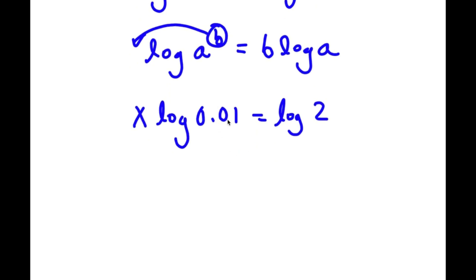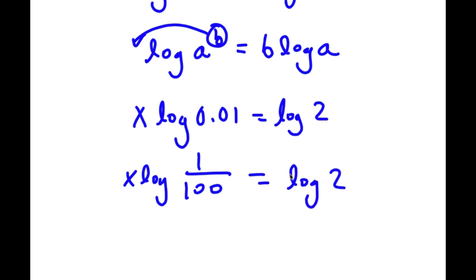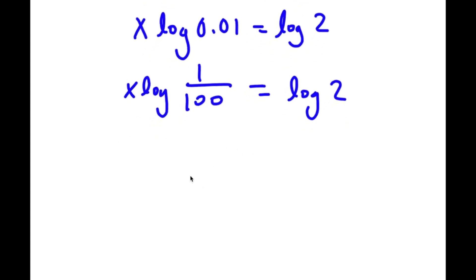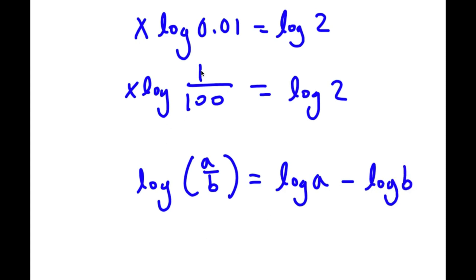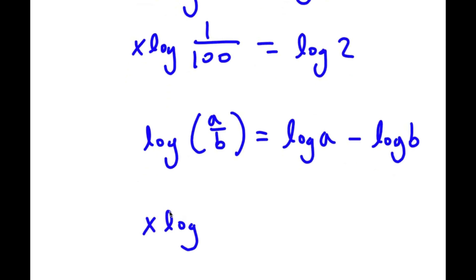Now, 0.01 is the same thing as 1 over 100. So now I have x times log 1 over 100 is equal to log 2. Now, if I have something in the form log a over b, this is equal to log a minus log b. So in this case, I have log 1 over 100, and I can rewrite this as x times log 1 minus log 100.